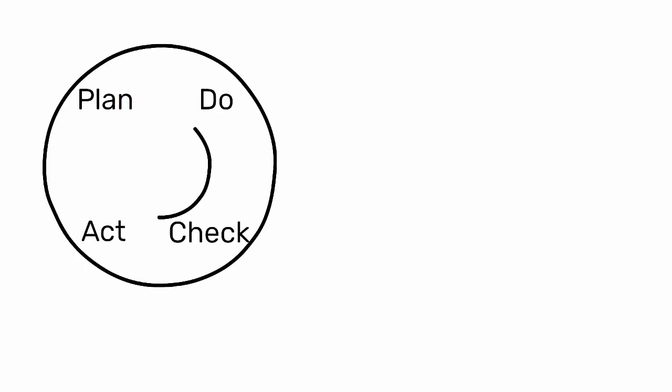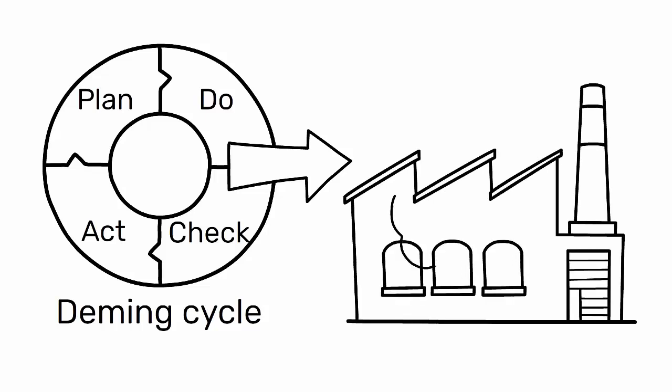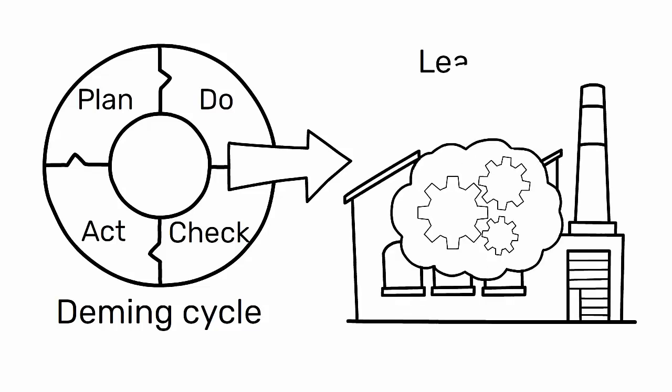The Plan-Do-Check-Act, PDCA cycle, also known as the Deming cycle, is a critical tool in the industrial engineering field, particularly in lean manufacturing. Here's why it's important.